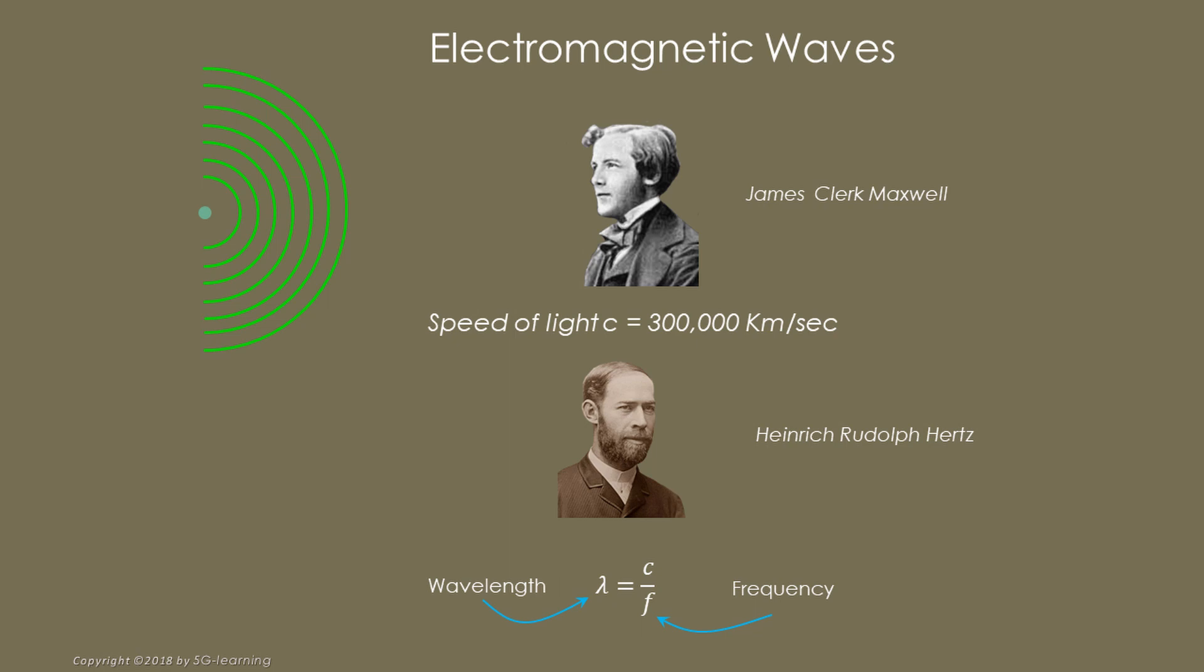If the source is sufficiently far away, waves may be considered plain. If f is the wave's frequency, its wavelength is c over f. For example, a 1 GHz radio wave has a wavelength of 10 cm.